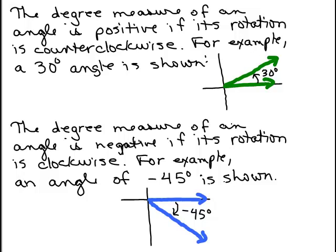The degree measure of an angle is negative if its rotation, this little arrow here, is in the clockwise direction. So if you see negative 45 degrees, you've got to make sure you're going in this clockwise direction.